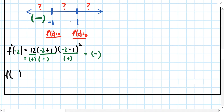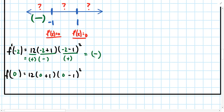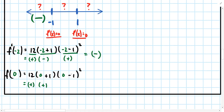For the middle interval between negative 1 and 1, I'll use the test point zero. The number 12 is positive; zero plus 1 is positive; zero minus 1 is negative, but that negative value gets squared, becoming positive. Three positive numbers multiplied together produce a positive result. So any value within this range shows the first derivative is always positive.